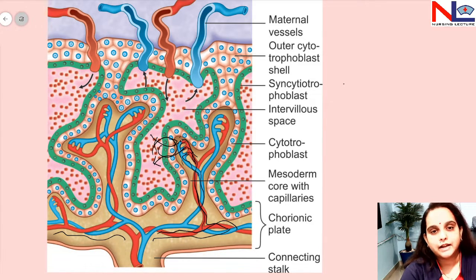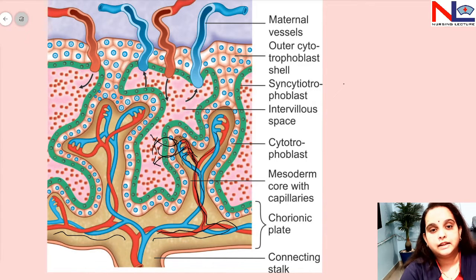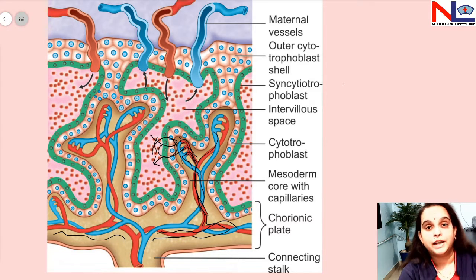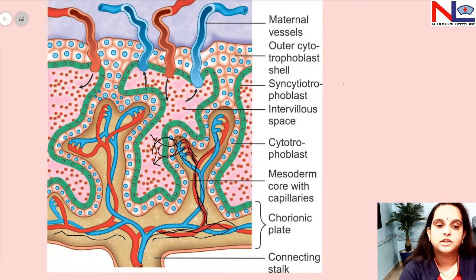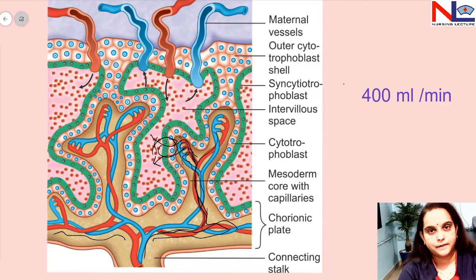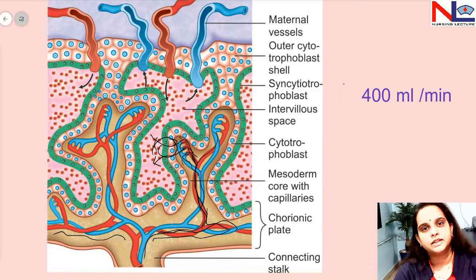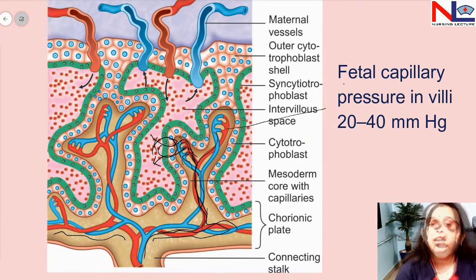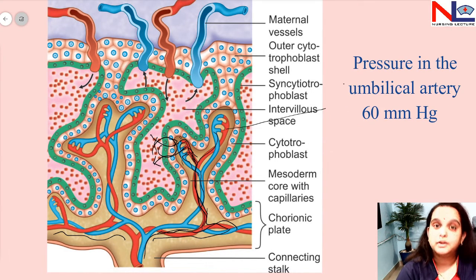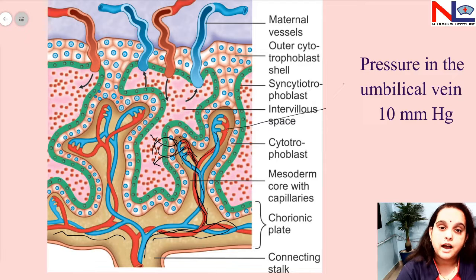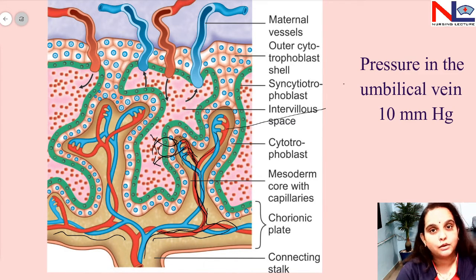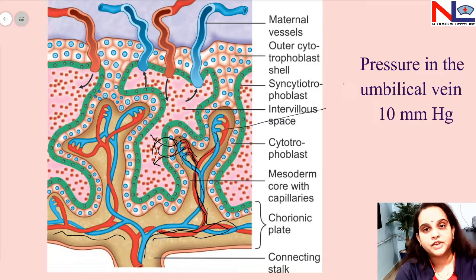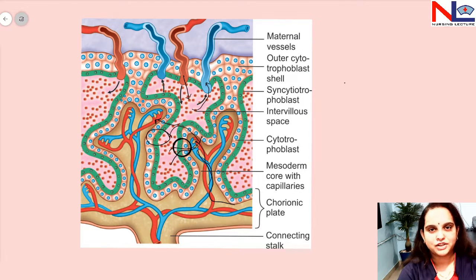This is how exchange takes place — oxygen and nutrients flow into the villous system, and waste and carbon dioxide are exchanged out. With a higher concentration of oxygen, the blood merges together, and the plexuses carry blood through a single umbilical vein that carries oxygenated, nutrient-rich blood toward the fetus. About 400 ml of fetal blood flows inside the placenta per minute. The pressure within the capillary system is about 20 to 40 mmHg, the umbilical artery pressure entering the villous system is 60 mmHg, and the umbilical vein returning blood to the fetus is under 10 mmHg. This was about placental circulation. Thank you for watching.